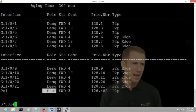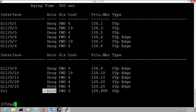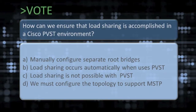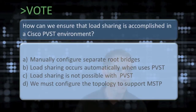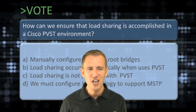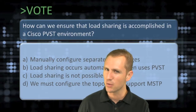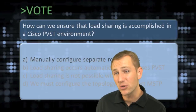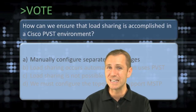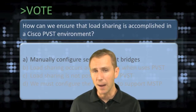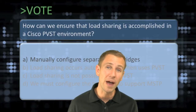Here's a question: how can we ensure that load sharing is accomplished in a Cisco PVST (per-VLAN Spanning Tree) environment? A) We manually configure separate root bridges, B) load sharing occurs automatically, C) load sharing is not possible, or D) we have to use MSTP. Most answers came in correctly — the answer is A: we have to manually configure per-VLAN Spanning Tree to use different root bridges to achieve load sharing over redundant connections. Bringing in guest expert Desiree to explain why this is required.